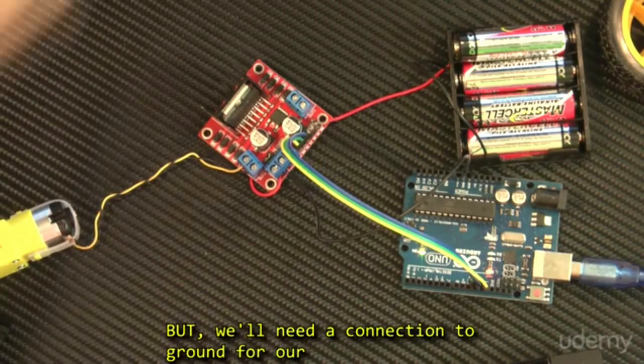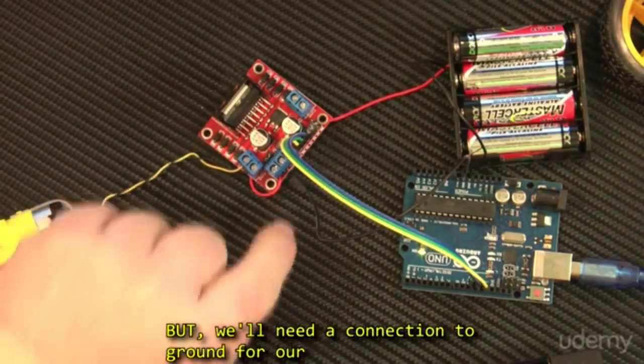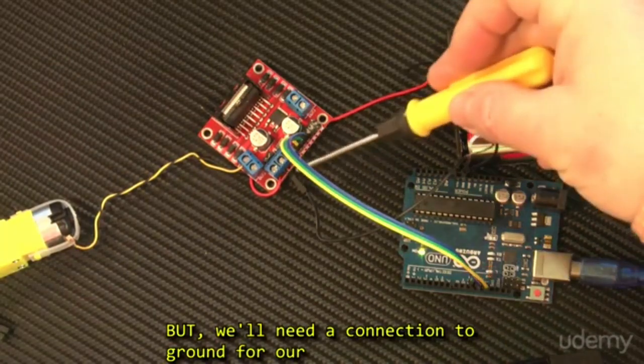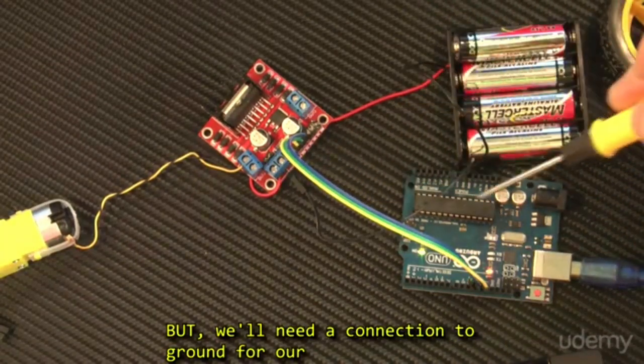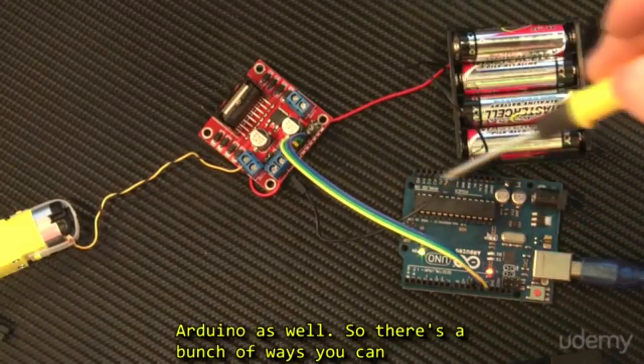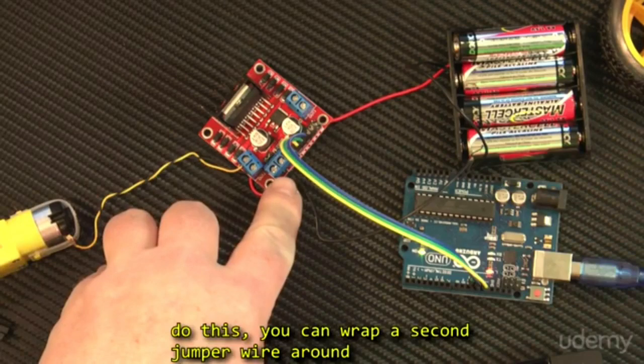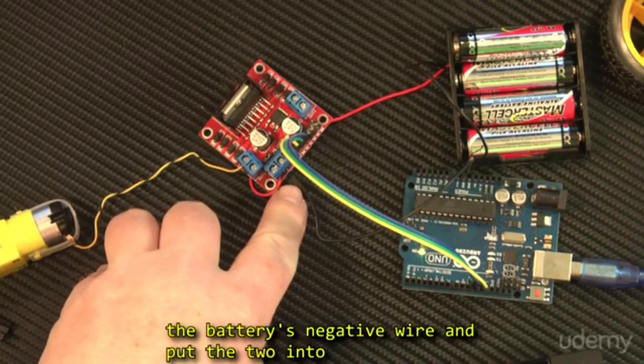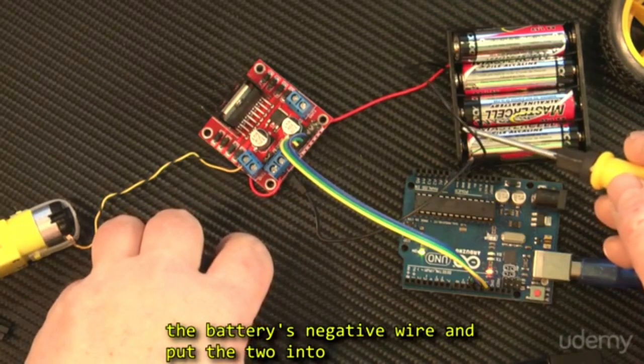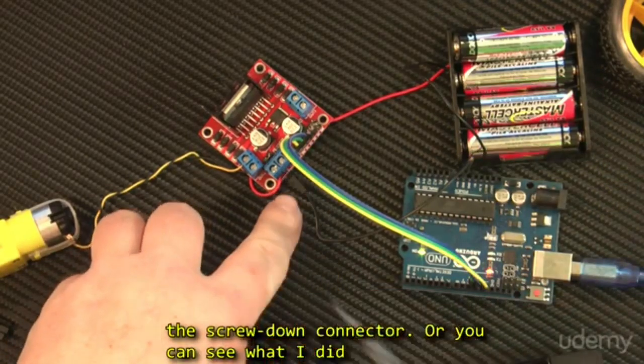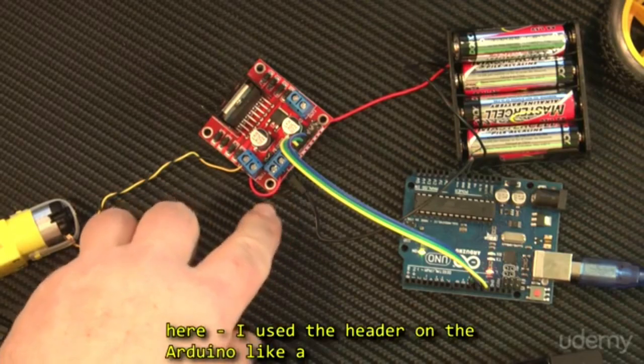So connect the negative and positive in this way, but we'll need a connection to ground for our Arduino as well. So there's a bunch of ways you can do this. You can wrap a second jumper wire around the battery's negative wire, and put the two into the screw down connector.